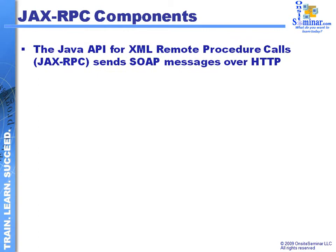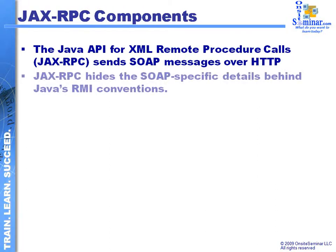Let's talk a little bit more about the JAX-RPC scenario and some of the components. The role of the Java API for XML Remote Procedure Call is to generate and send messages embedded inside of HTTP and the HTTP protocol. The JAX-RPC standard is going to hide the SOAP-specific details from our applications using remote method invocation concepts.